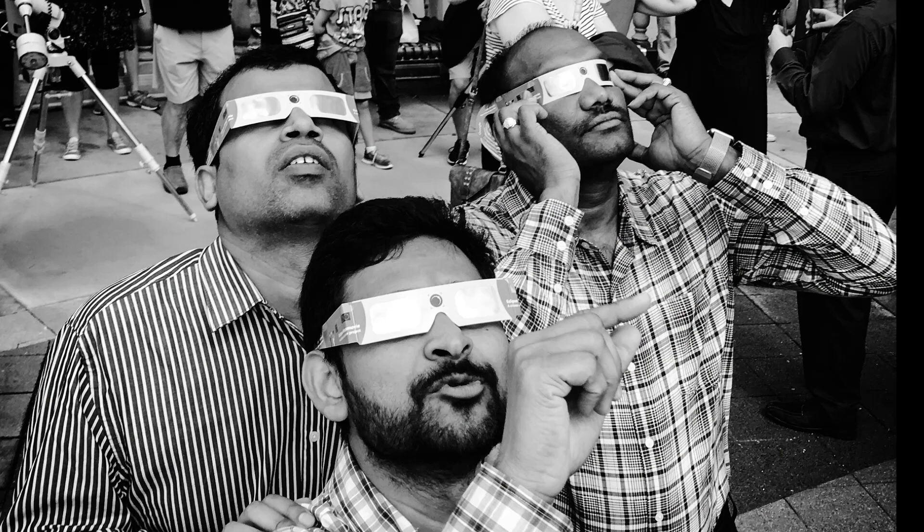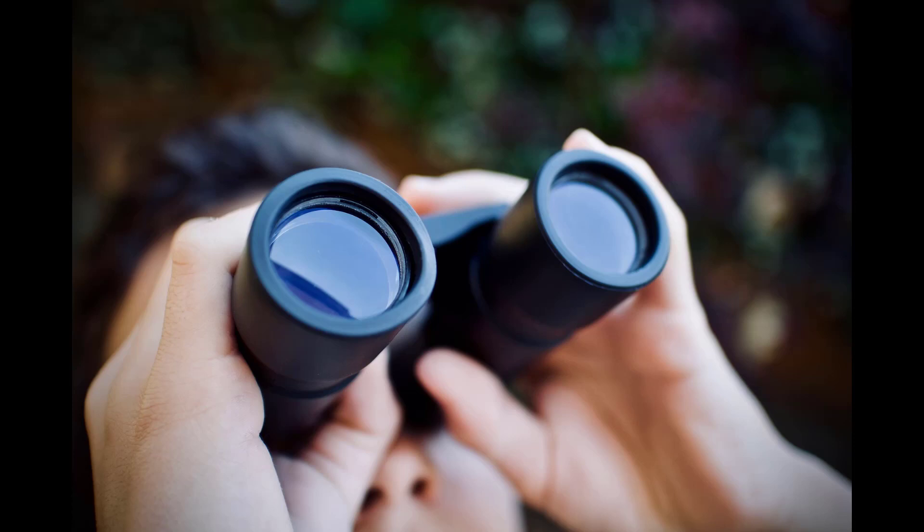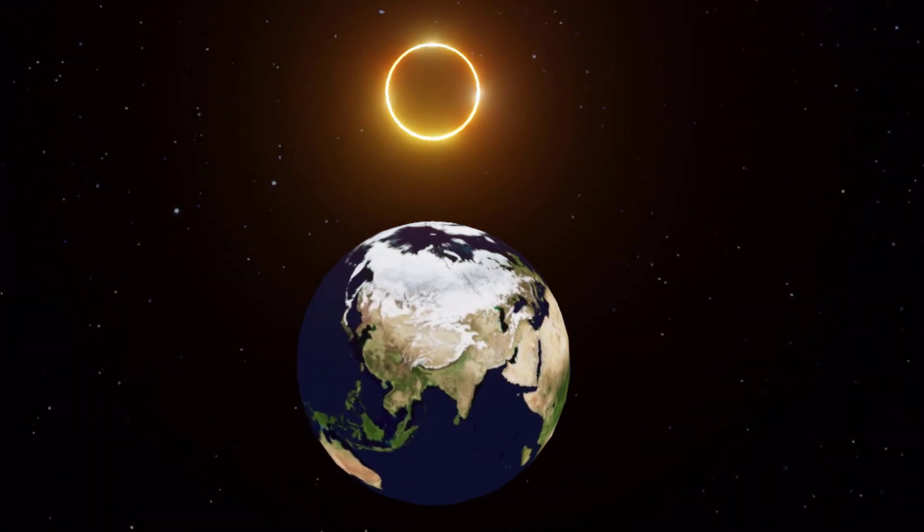The best way to view a solar eclipse is through special eclipse glasses or a telescope with a solar filter. Never look directly at the sun, even during a partial eclipse.